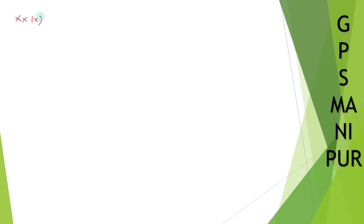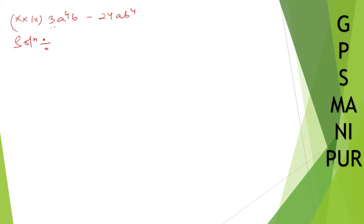Now let us do the next question, roman number 29: 3A to the power 4 B minus 24AB to the power 4. For the solution, we need to take out common factors to form a perfect cube. So from here, take 3 out, take one A out, and take B out.